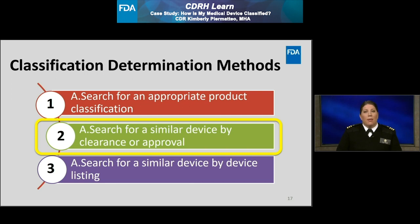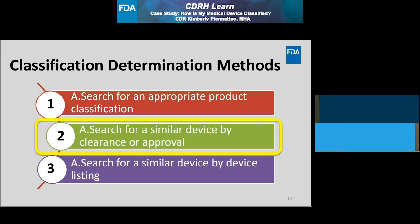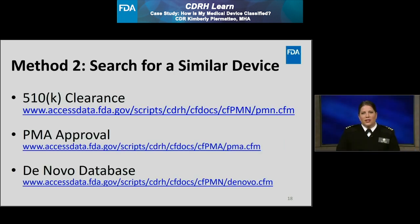Next, I'm going to discuss method 2, which is to search for a similar device by its clearance or approval. Using method 2, I will demonstrate that I will come to the same conclusion as method 1 by determining that the ITH product code is the most appropriate for a powered traction device. I can search for a similar device by 510K clearance or pre-market approval. For this method, it is important to note I would only be able to search for devices which have received 510K clearance or pre-market approval. Since most class 1 devices are exempt from 510K, I would not be able to find them by using this method.